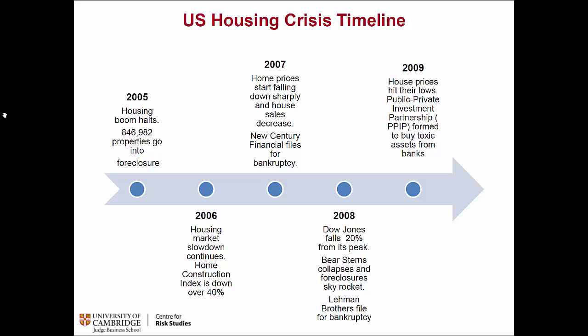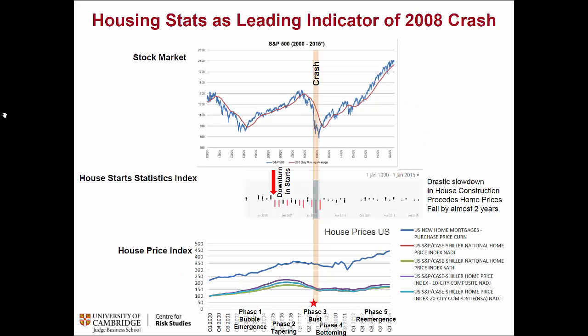This is the timeline of the crisis. In 2005 we see some foreclosures starting. In 2006 there is a slowdown and the construction index is down 40%. By 2007 prices started falling and New Century filed for bankruptcy. 2008 is where it all accumulates with a sharp fall in the US equity index — Bear Stearns and Lehman go out of business. By 2009 the situation is so bad the government has to step in. The crash is about end of 2008 through 2009.